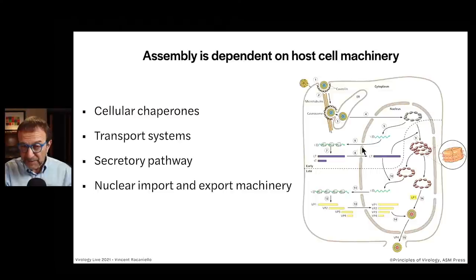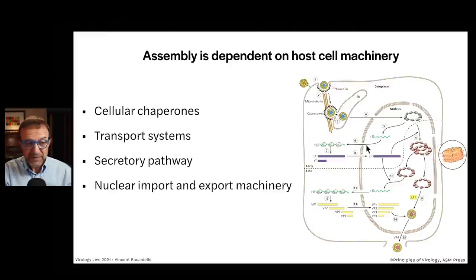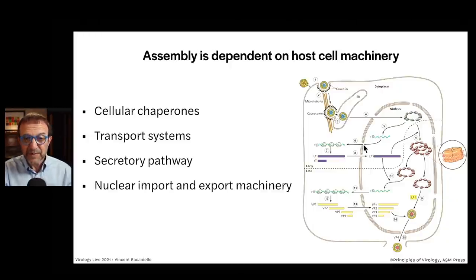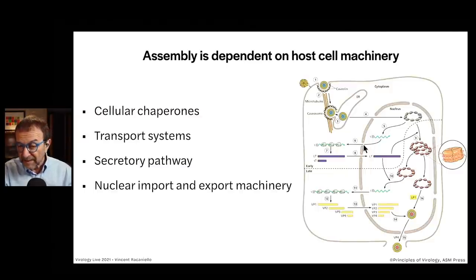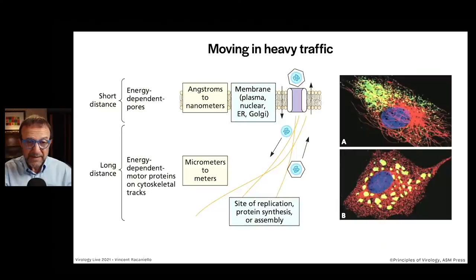There are pores in the nuclear membrane — there's a membrane around the nucleus which is impermeable. It has pores so that molecules up to a certain size can get in and out. That requires a selective transport system, import and export, and viral proteins take advantage of that. Nucleic acids go in and out as well, but they always have to be bound to a protein, because the import-export machinery of the nucleus is protein-based.